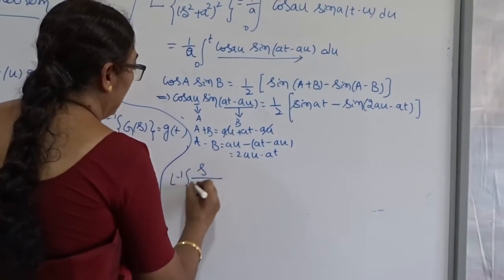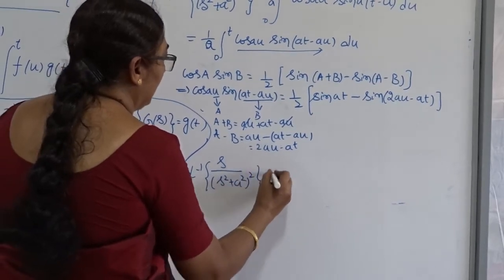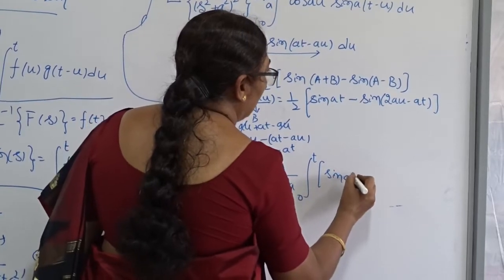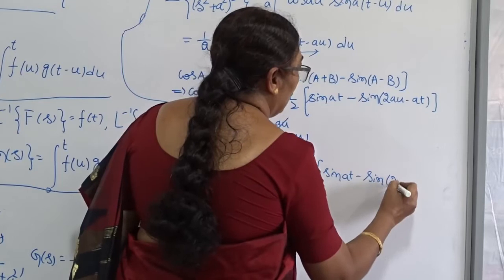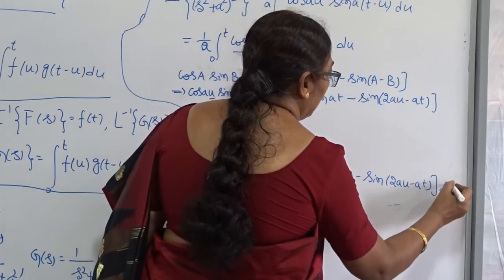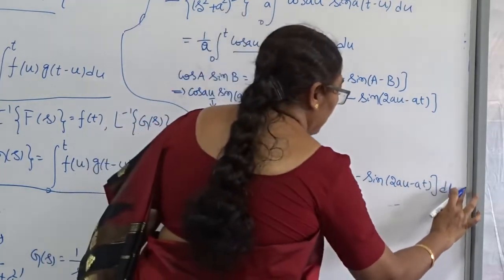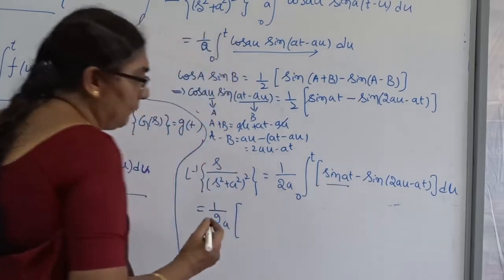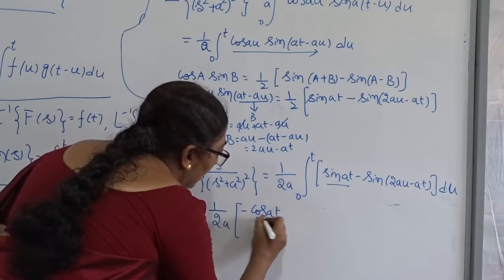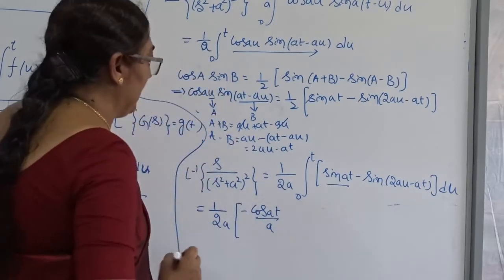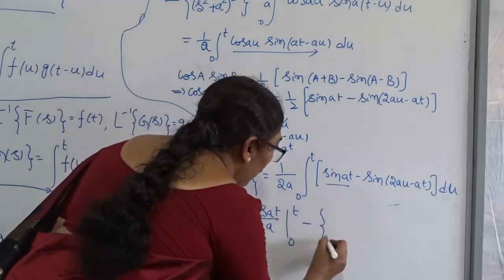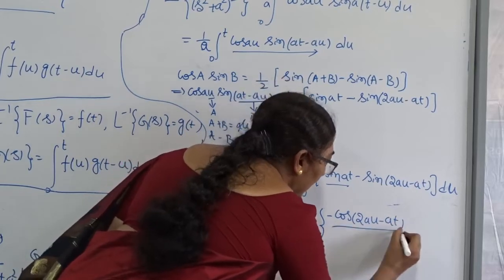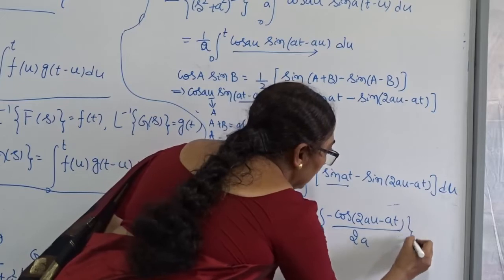So the inverse Laplace of S/(S² + a²)² equals (1/a) times ½ times the integral from 0 to t of [sin(at) − sin(2au − at)] du, which is (1/2a) times the integral from 0 to t of [sin(at) − sin(2au − at)] du. Now I integrate term by term. The integral of sin(at) with respect to u is simply u·sin(at), evaluated from 0 to t — since sin(at) is constant with respect to u.